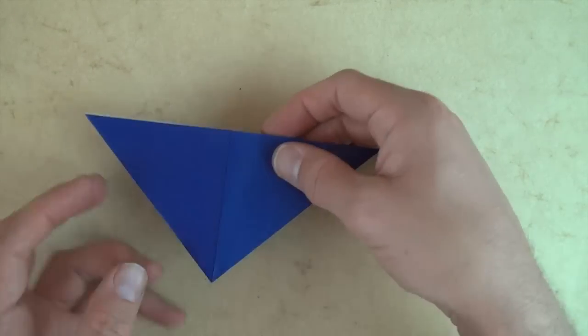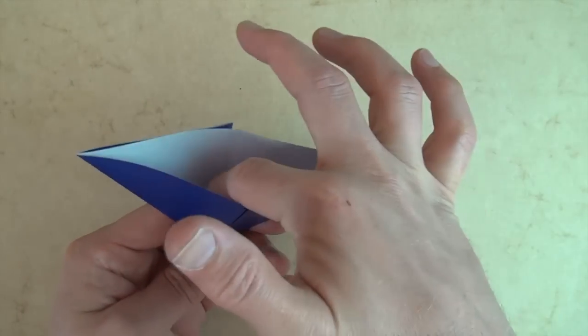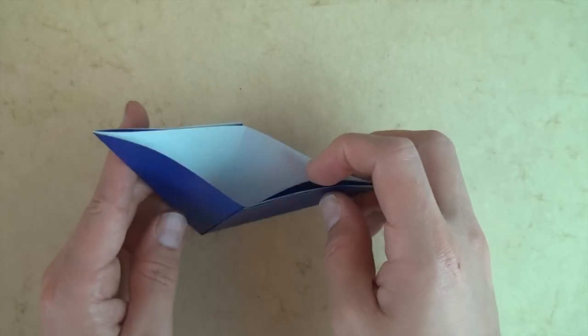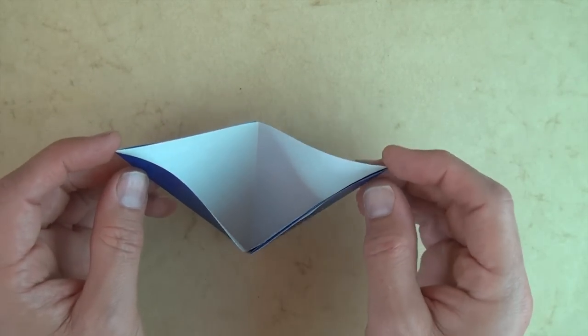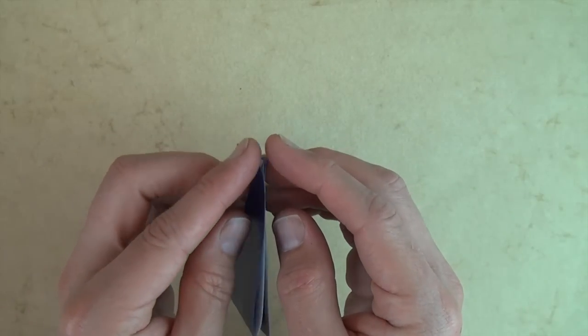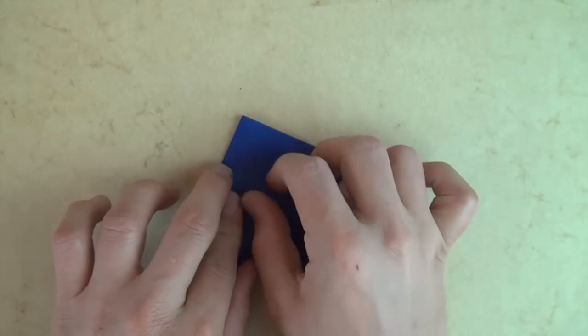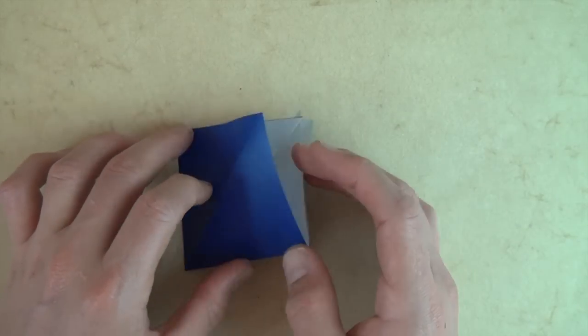And now let's tilt it up like this, open up the pocket, and bring this point and this point together like this. And we have a square base.